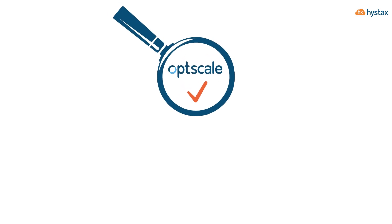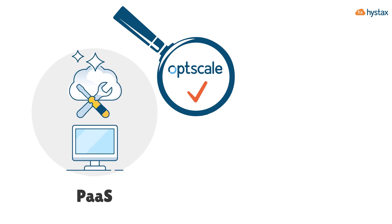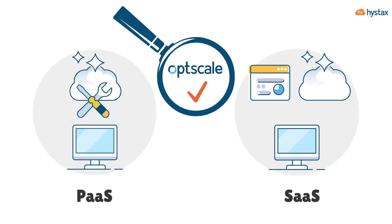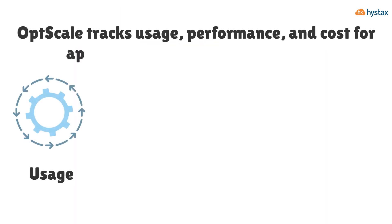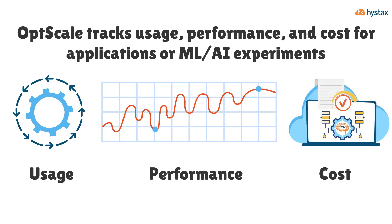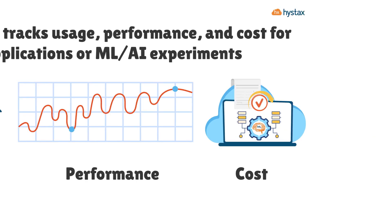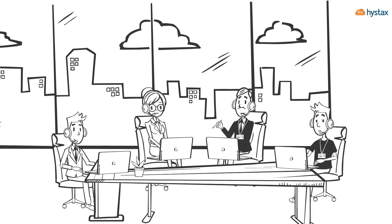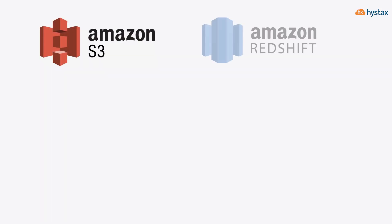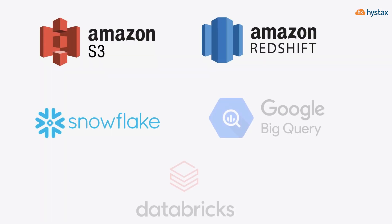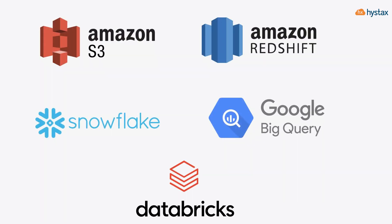In parallel, OptScale instruments any POS or external SaaS services, tracks usage, performance, and cost for applications or ML/AI experiments. You can figure out the complete picture of API calls, usage, and cost for your ML model training or data engineering experiments.